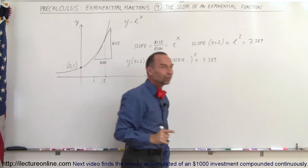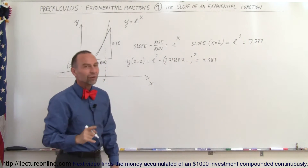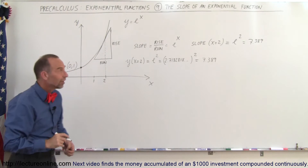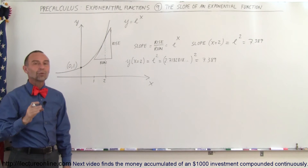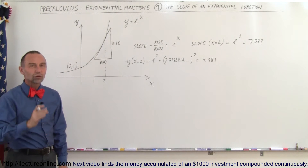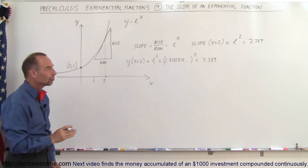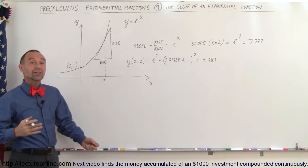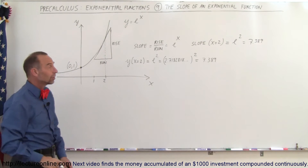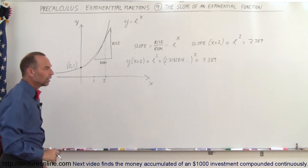So the slope when x equals 2 is equal to e to the second power, which is also equal to 7.389. This means the exponential function is such that the value of the function is always equal to the slope of that function for any value of x. That's actually kind of amazing when you think about it.